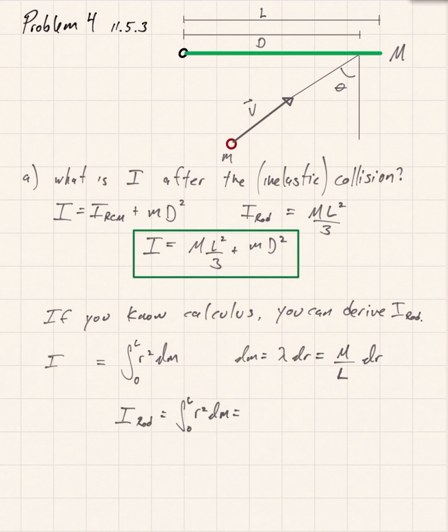So then we do the integration. We replace dm by m over l times dr. Now m over l, that's a constant, so we can pull that out of the integral. We just have the integration of r squared dr, which is a very simple integration that's going to give you r cubed over 3 evaluated from 0 to l. So that's just going to make the r go to l. It's going to be m over l times l cubed over 3. The l's cancel out and there you have the moment of inertia of the rod.